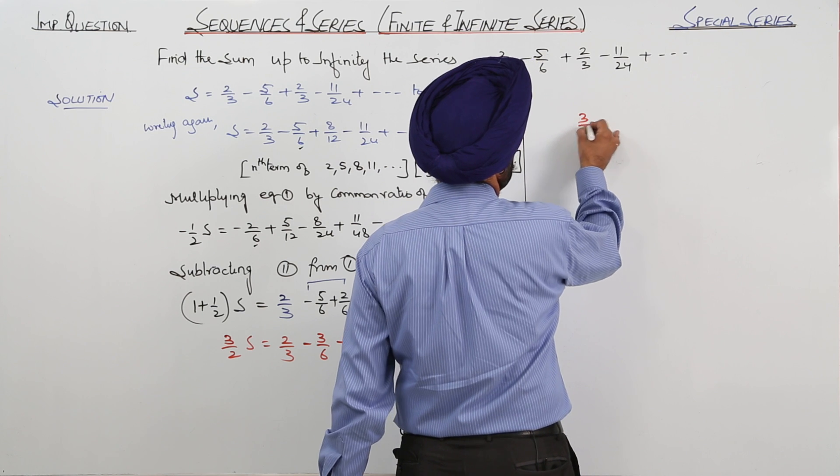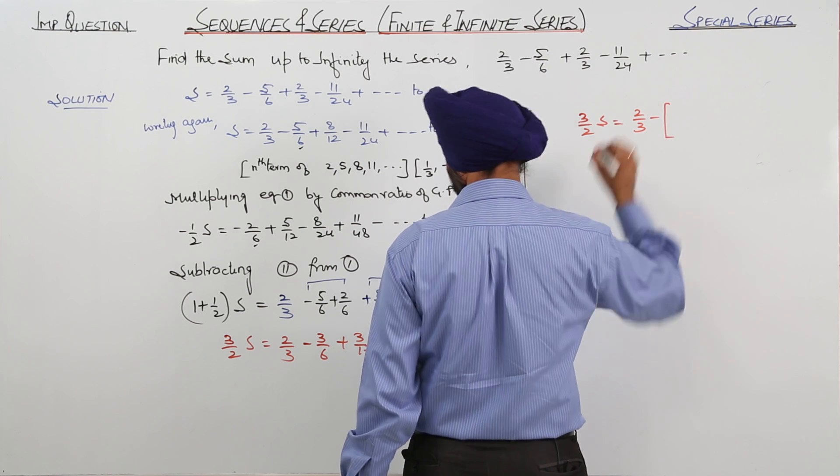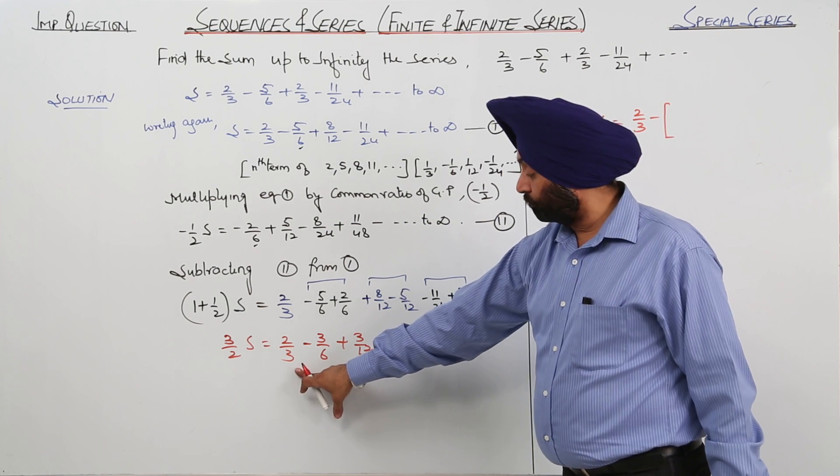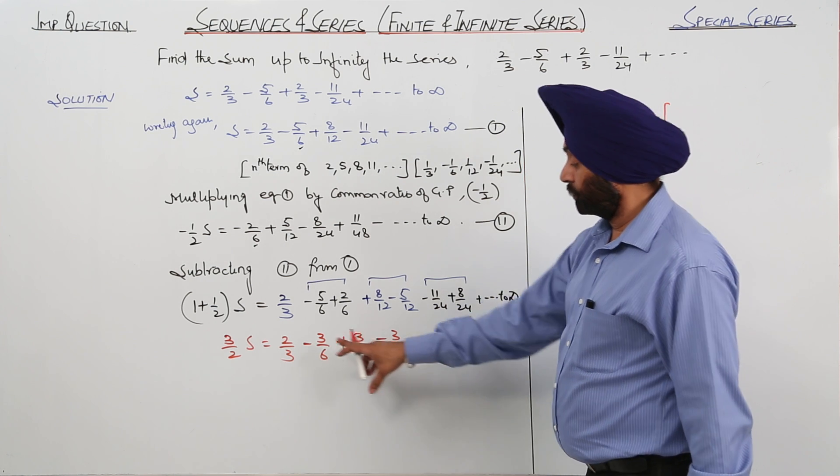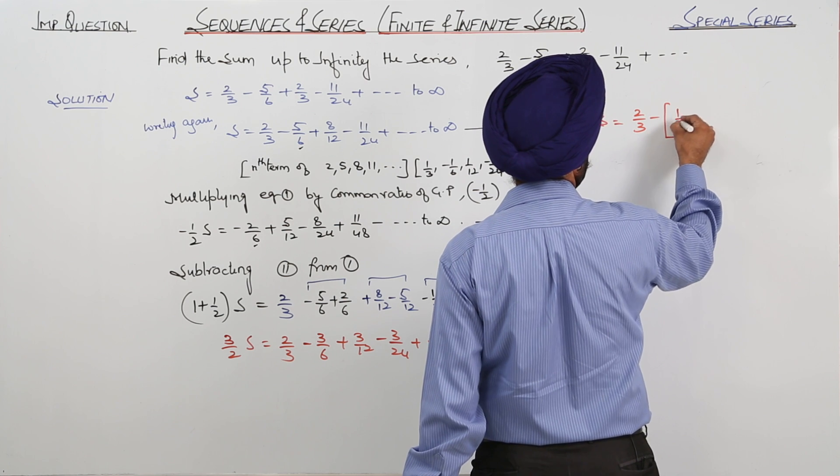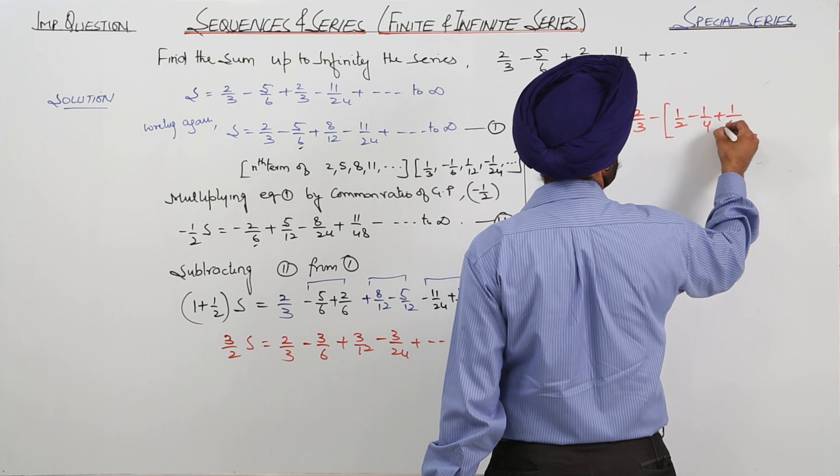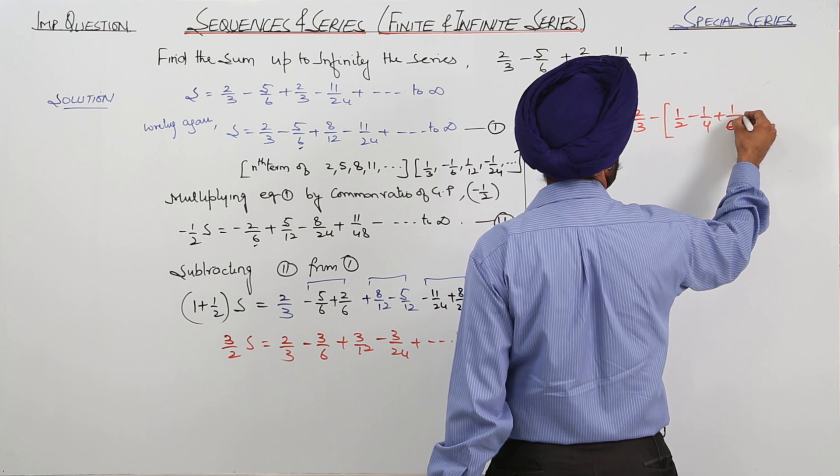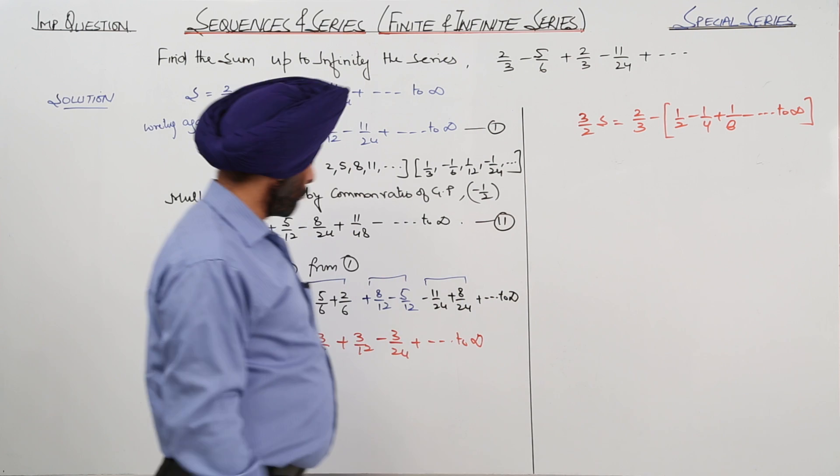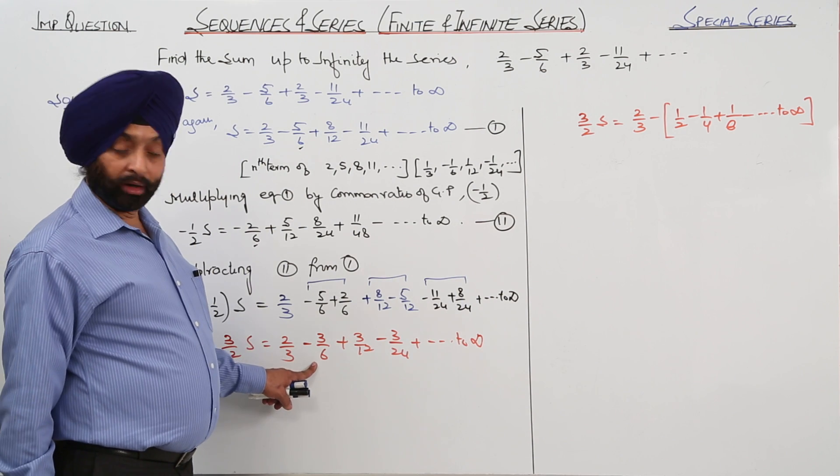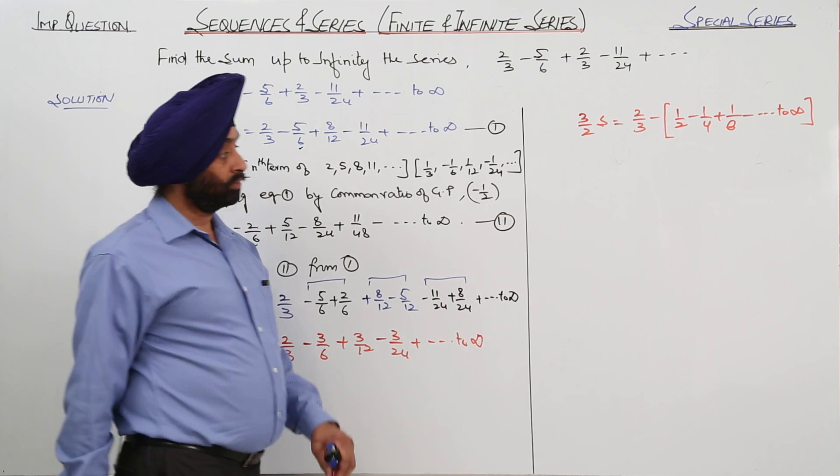3 by 2 S is equal to 2 by 3 minus, taking first term as it is. Now from all the remaining terms taking negative as a common, can I write it 1 by 2 minus 1 by 4 plus 1 by 8 to infinity. Just check it: 3 by 6 cancels, we are getting 1 by 2, 1 by 4, 1 by 8 like this, it goes on.